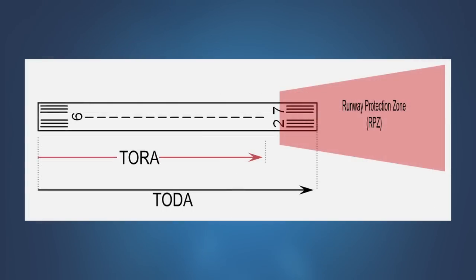For example, the takeoff run available may be shorter than the runway length if a portion of the runway must be used to satisfy runway protection zone requirements.